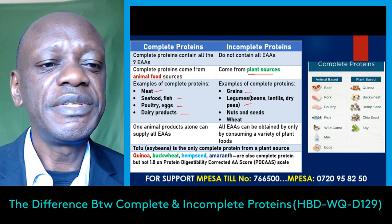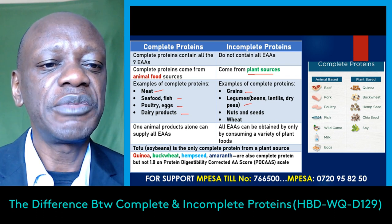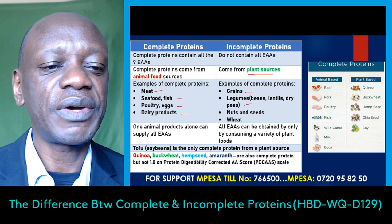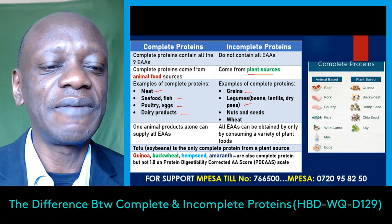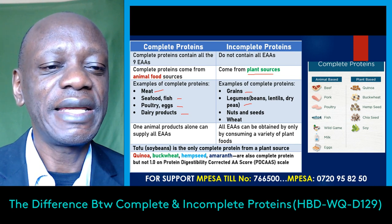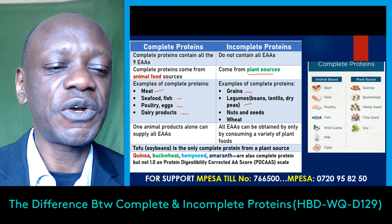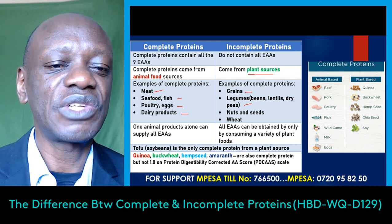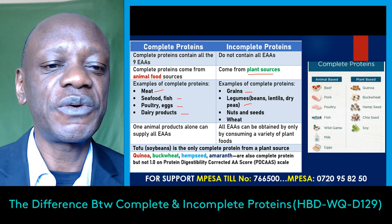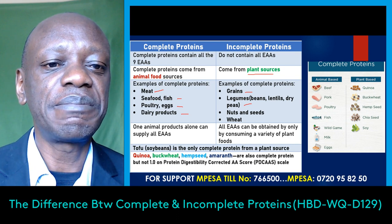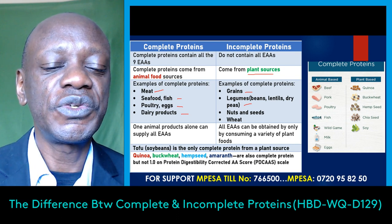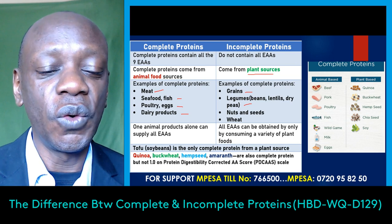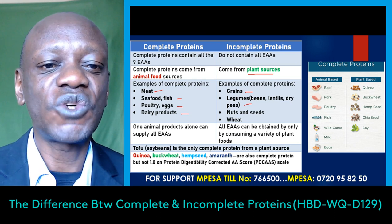One animal product alone can supply all the essential amino acids. For example, if I consume an egg, I get all nine essential amino acids; if I consume meat, I get all nine essential amino acids. However, if I consume bread or beans alone, I don't get all the essential amino acids.